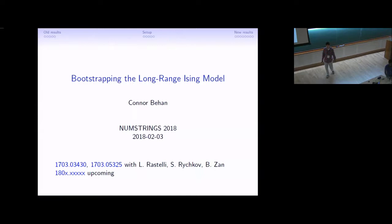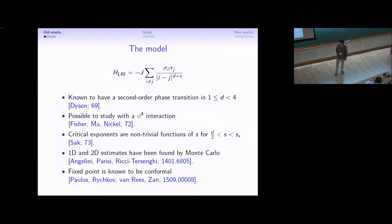I'd like to start by thanking the organizers for inviting me to this program and giving me an opportunity to tell you about an application of the conformal bootstrap. The long-range Ising model is easy enough to define. It comes from this lattice Hamiltonian where, instead of summing over nearest neighbors, you sum over all pairs of sites where the interaction decays with the distance like a power law. Everything that I'm going to say applies to the case when J and S are positive.